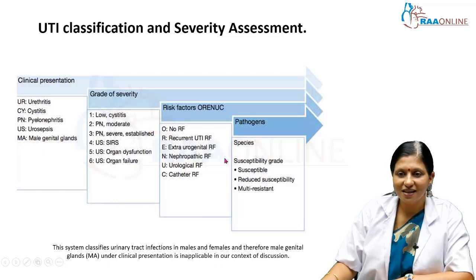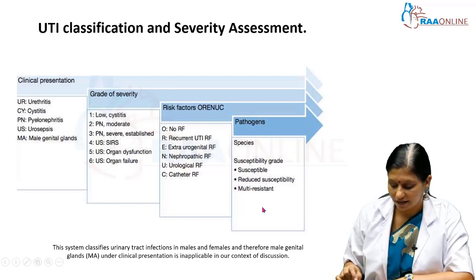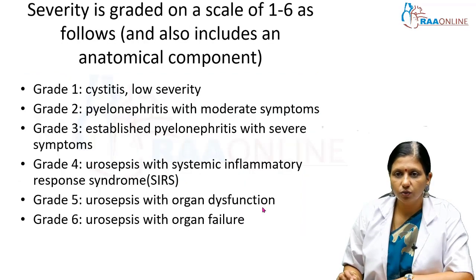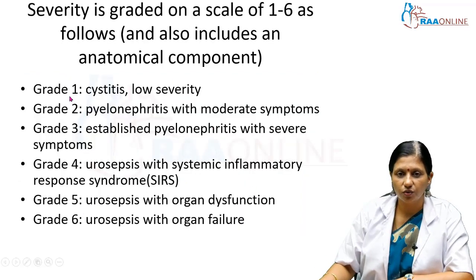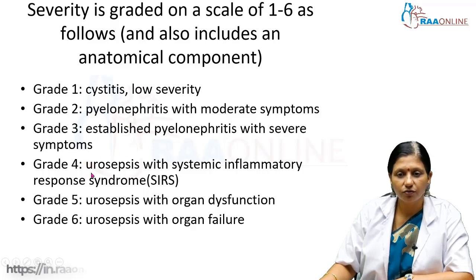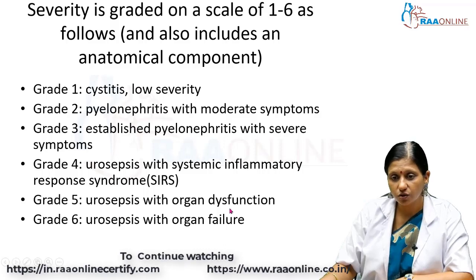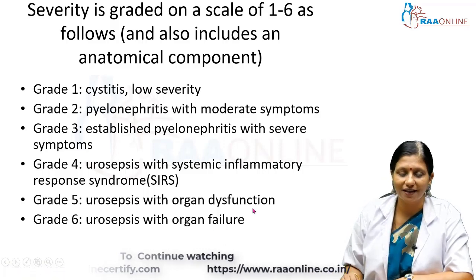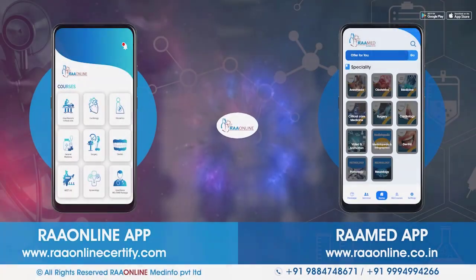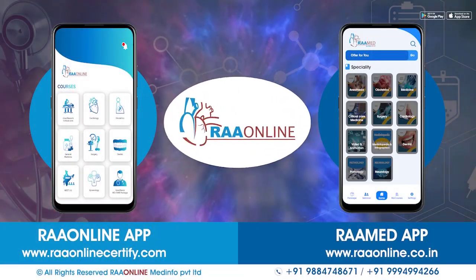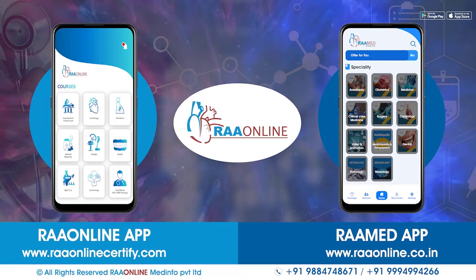This is the ICD-10 classification of urinary tract infection. Severity ranges from Grade 1 to 6: Grade 1 is low-severity cystitis; Grade 2 is pyelonephritis with moderate symptoms; Grade 3 is established pyelonephritis with severe symptoms; Grade 4 is urosepsis with SIRS; Grade 5 is urosepsis with organ dysfunction; and Grade 6 is urosepsis with organ failure.